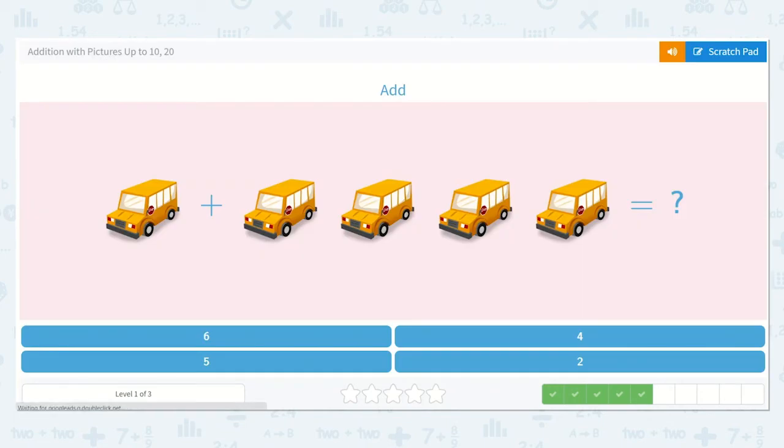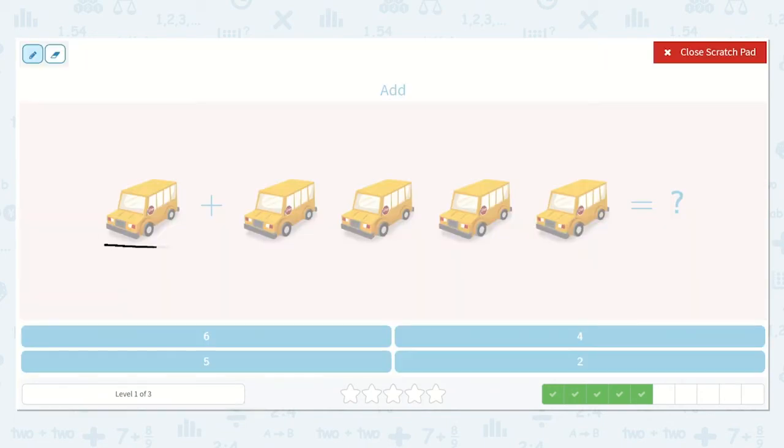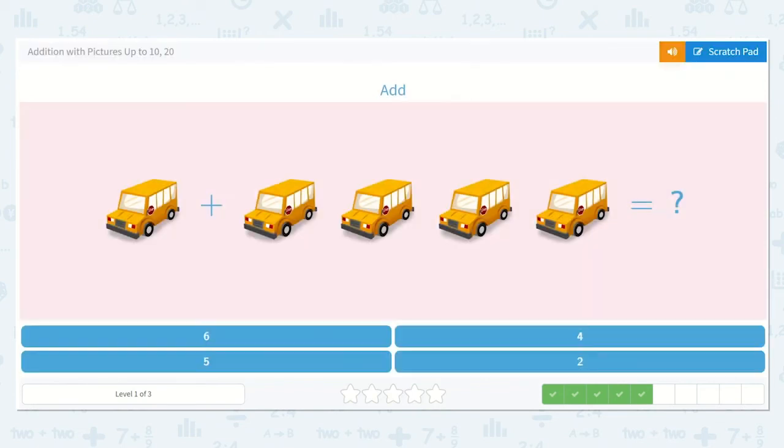All right. Let's add 1 plus 1, 2, 3, 4. 1 plus 4 is equal to... what? How many are there all together? Let's count. 1, 2, 3, 4, 5. 1 plus 4 is equal to 5. I see the 5 down here.